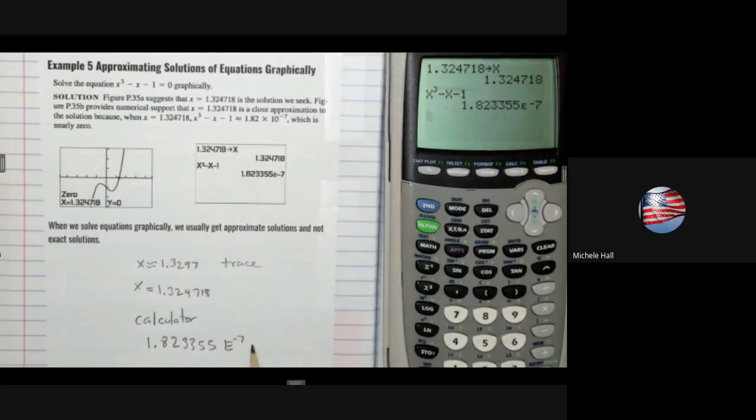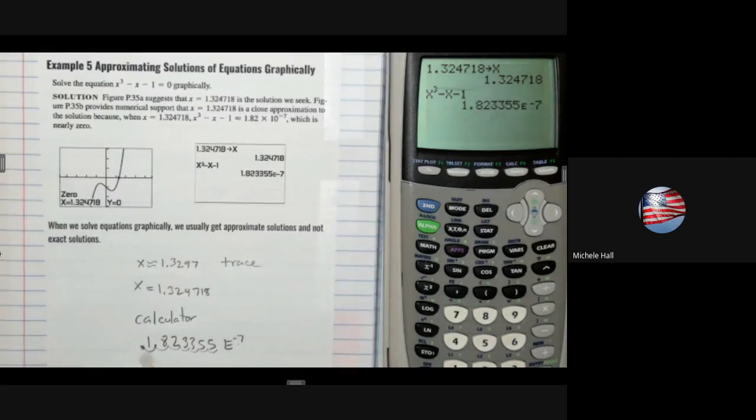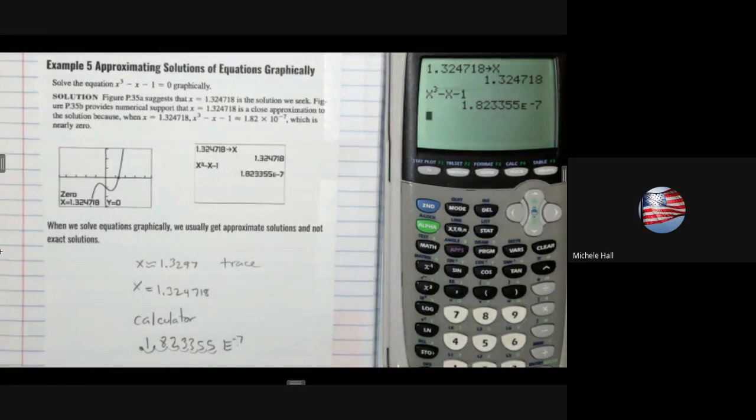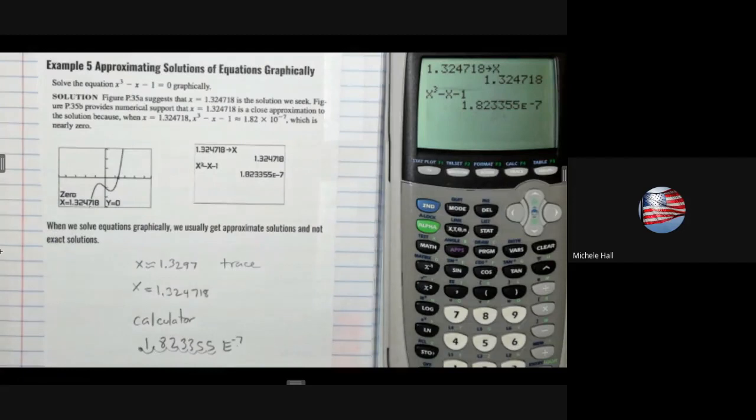That means I need to move my decimal. This is like scientific notation. I need to move my decimal 7 times: 1, 2, 3, 4, 5, 6, 7. So that's like 0.0000001823355. That's pretty close to 0. That is how I can approximate solutions. Approximating is not exact.